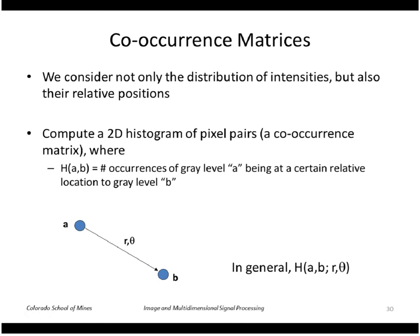We can also look at a way to describe texture using co-occurrence matrices. This technique considers not just the distribution of intensities, but also their relative positions.